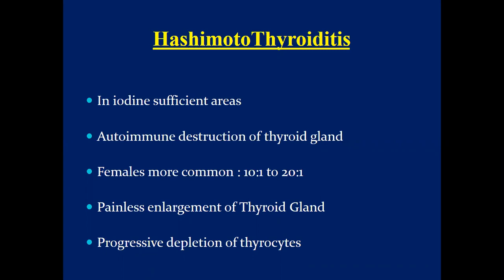Hashimoto's thyroiditis is the most common cause of hypothyroidism in areas where iodine is sufficient. Its name is derived from the 1912 report by Hashimoto describing patients with goiter and intense lymphocytic infiltration of the thyroid, also known as struma lymphocytic thyroiditis. It involves autoimmune destruction of the gland. Females are more commonly affected, with a ratio of 10:1 up to 20:1. There is painless enlargement of the thyroid gland, and although it is more common in older females, it may also occur in young children.